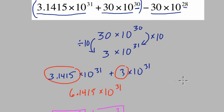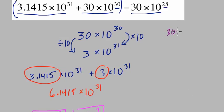Now, we've got to subtract from this 6.1415 times 10 to the 31st. We've got to subtract 30 times 10 to the 28th from it. So, back to the drawing board, right? Let's take 30 times 10 to the 28th. I want it to say 10 to the 31st. So, to do that, that means you have to multiply by 1,000 or 3 powers of 10,